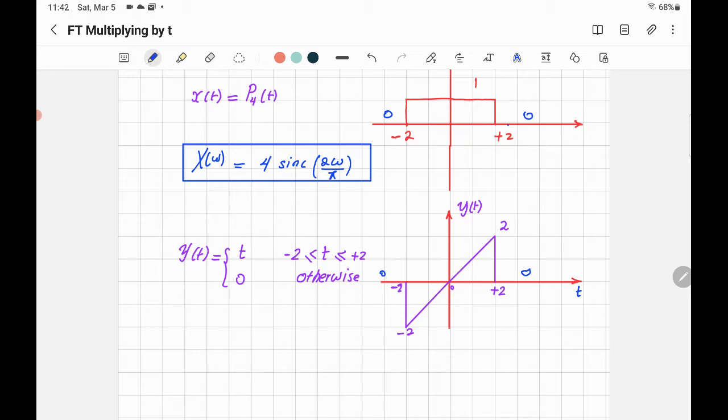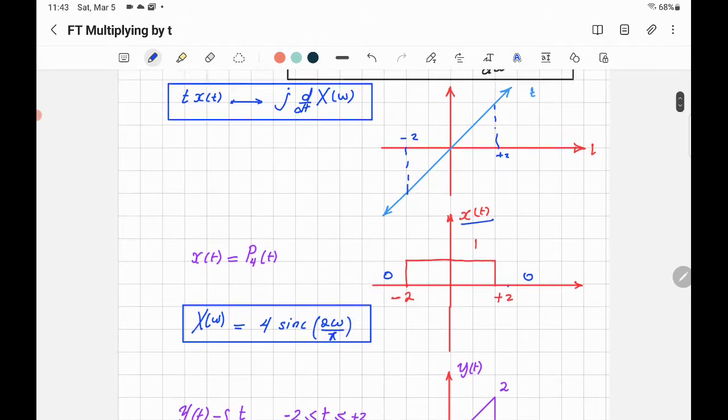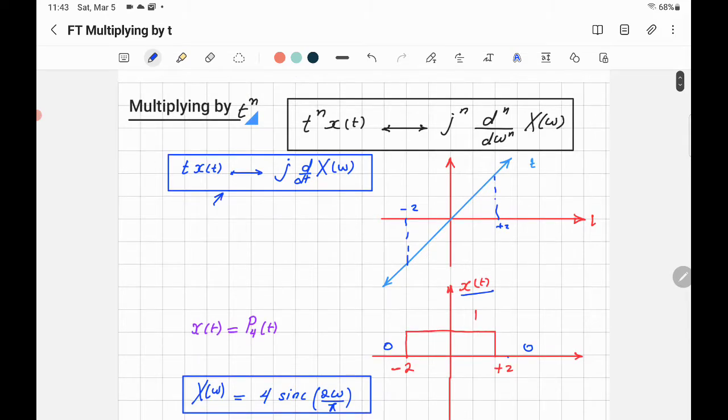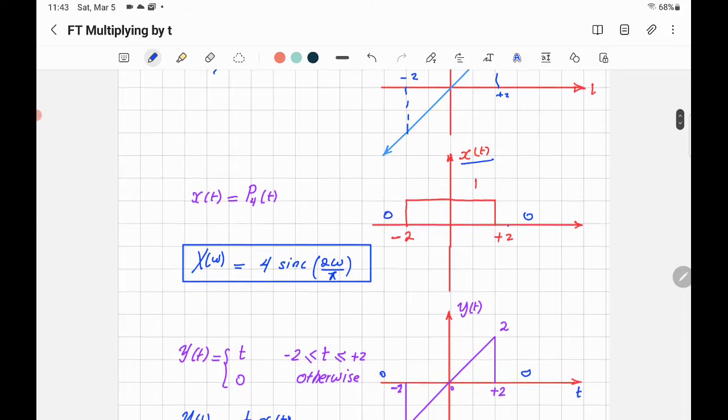So how we express this one? You can express it by writing y of t. Y of t is equal to x of t, this rectangular pulse, and multiply it by t. So in this case we can apply this formula. So what you'll do, first find x of omega.